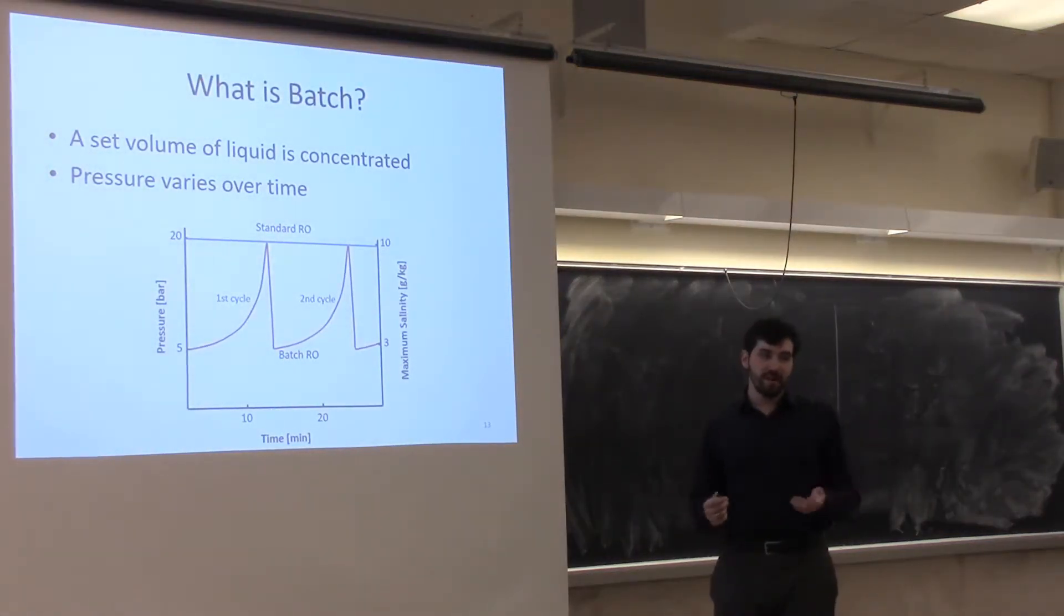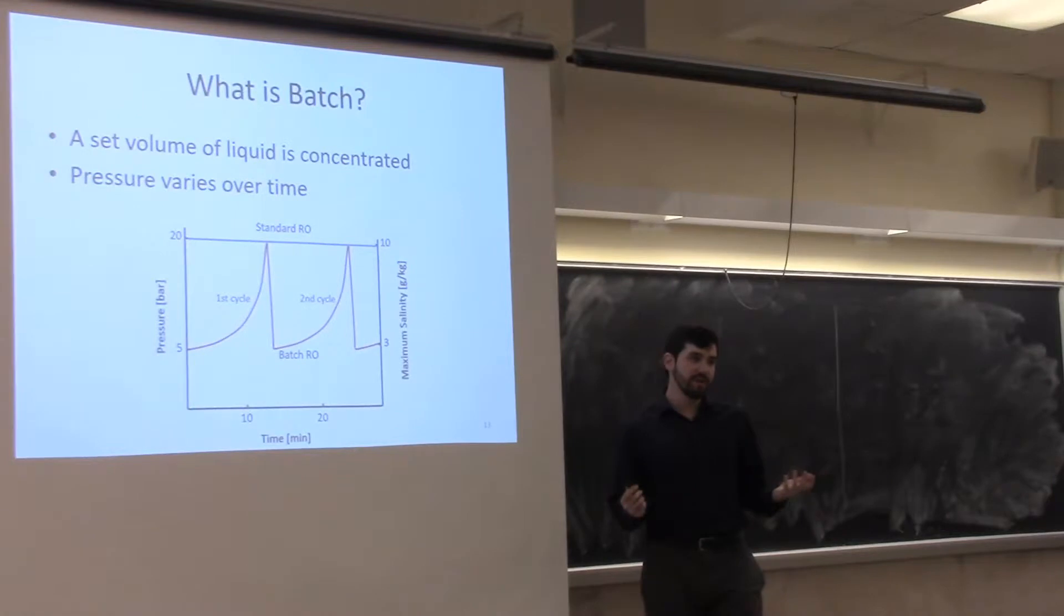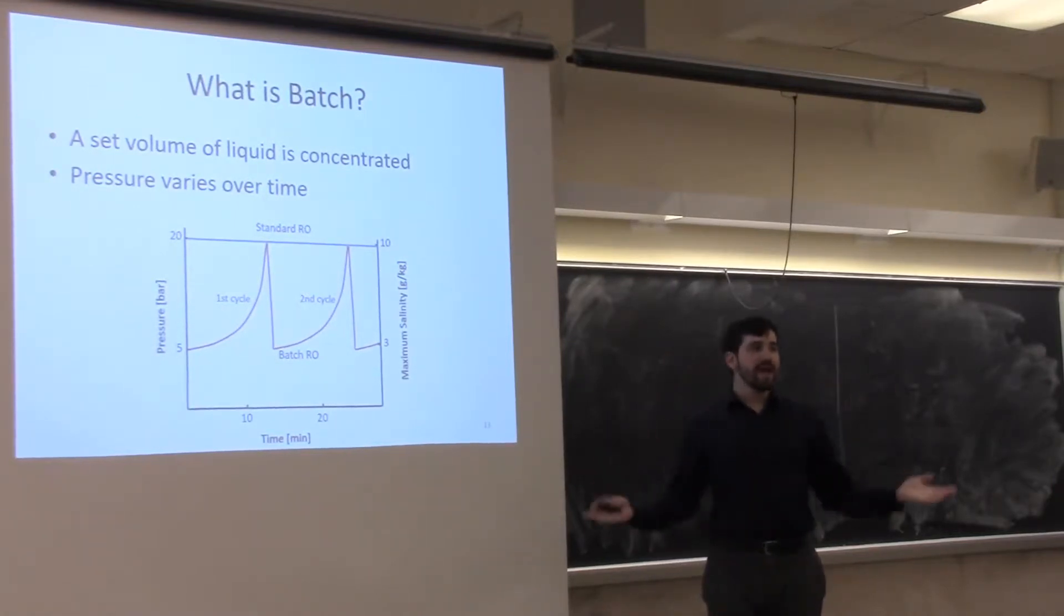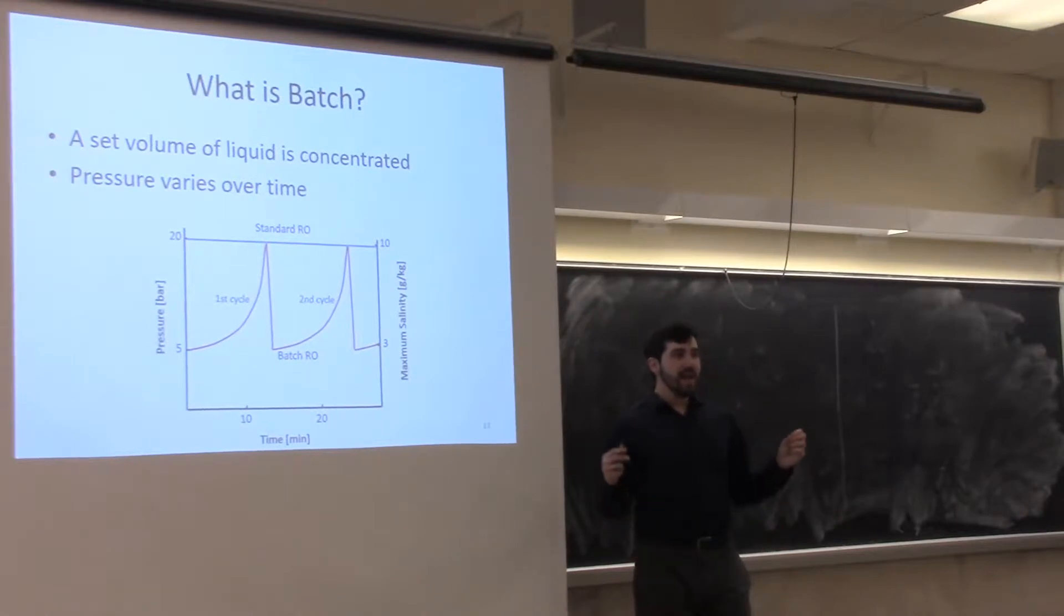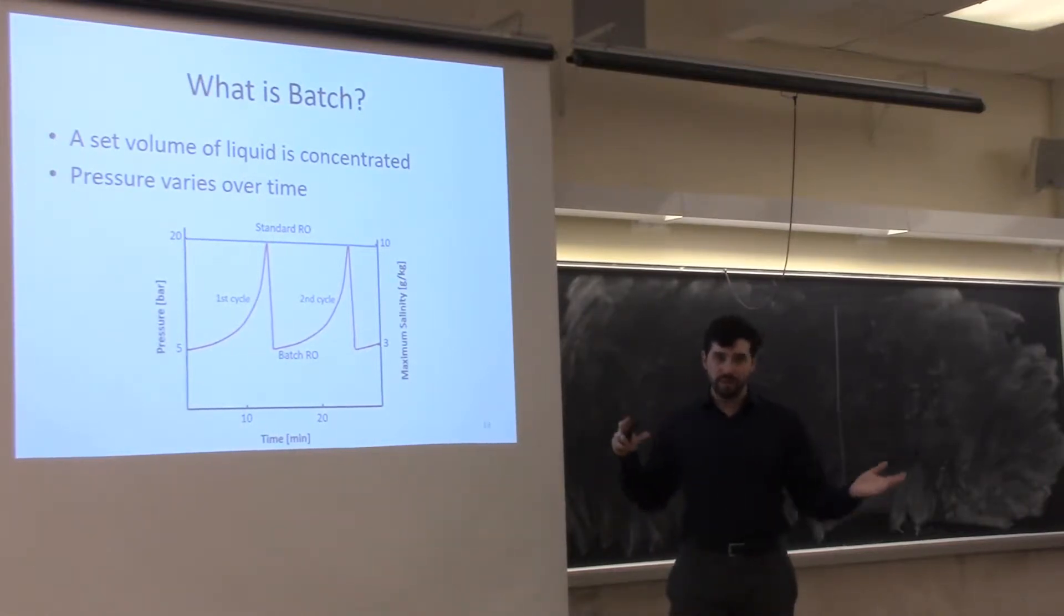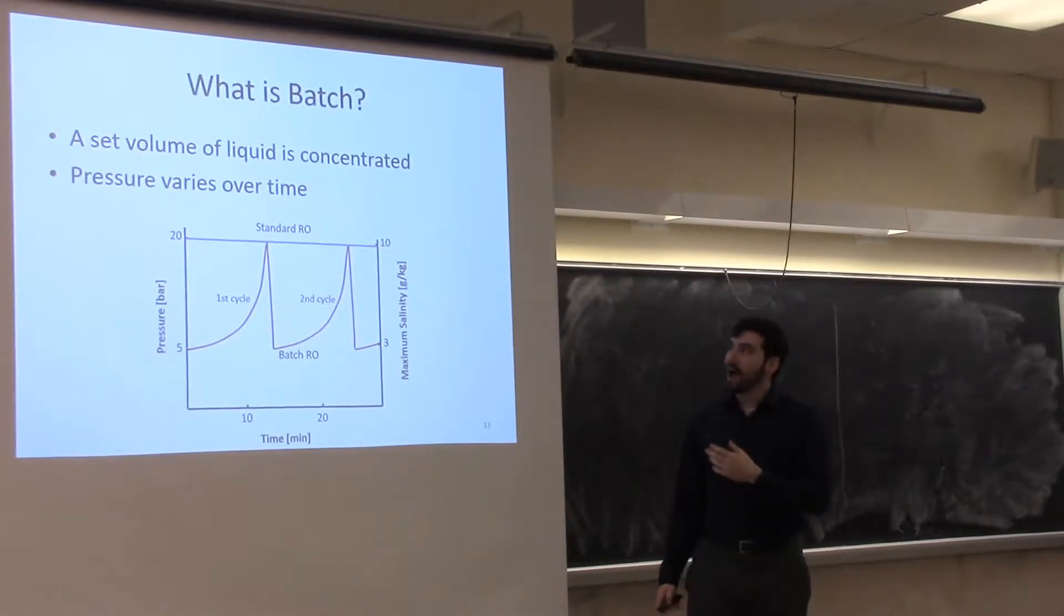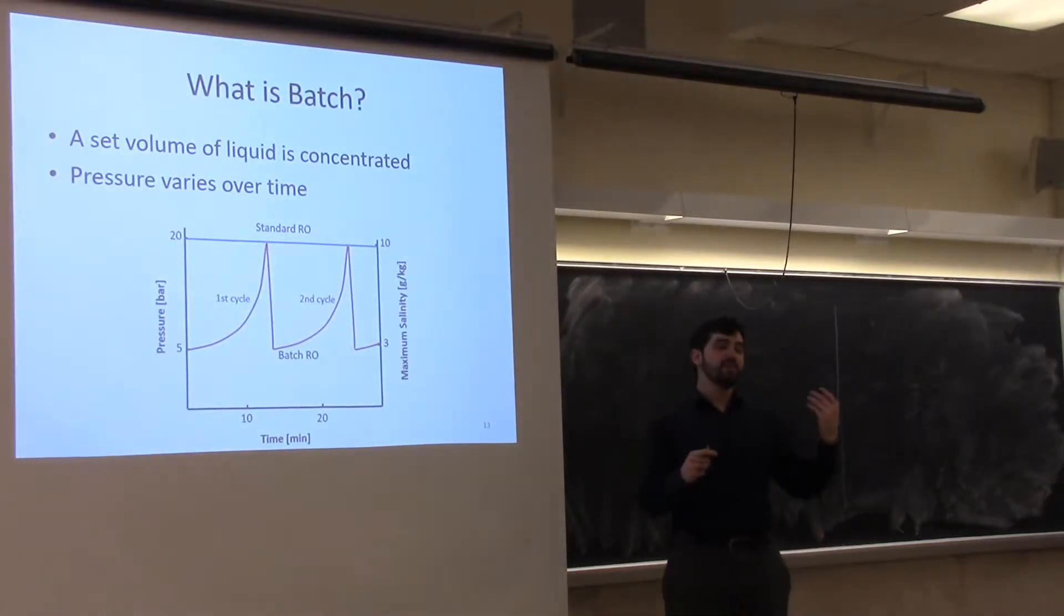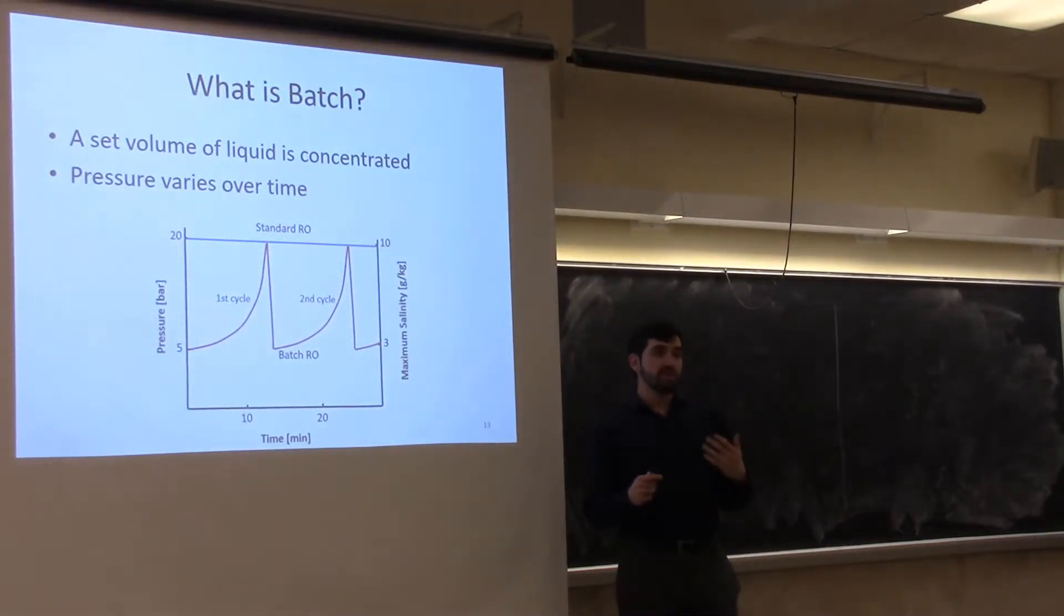Now we're talking about batch reverse osmosis. What does batch mean? In any chemical process, simply a batch process is one where we take a set volume of fluid and do something to it over time and repeat the process. When I'm saying batch in reverse osmosis, I'm saying that we take a set volume of fluid and ideally we actually vary the pressure over time as we vary the salinity over time to improve the efficiency.